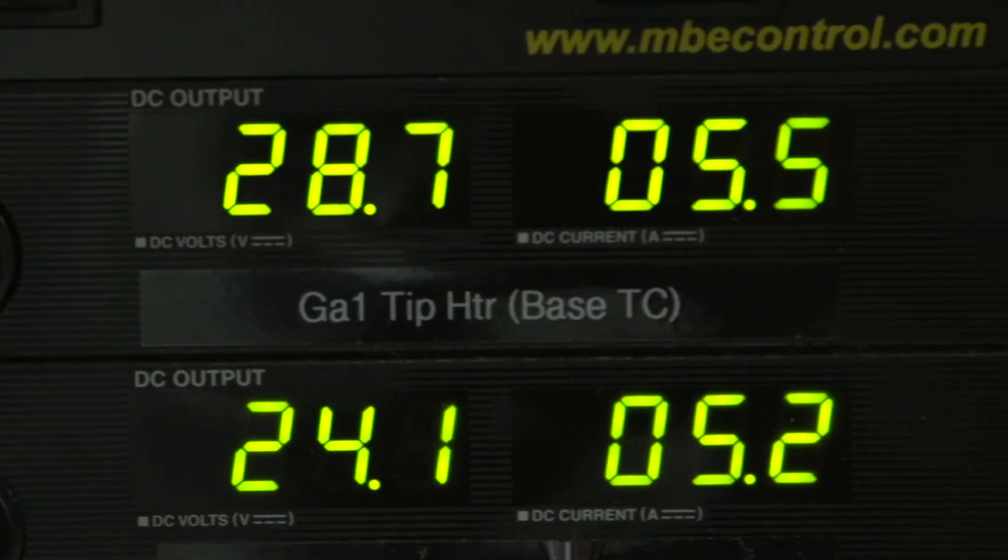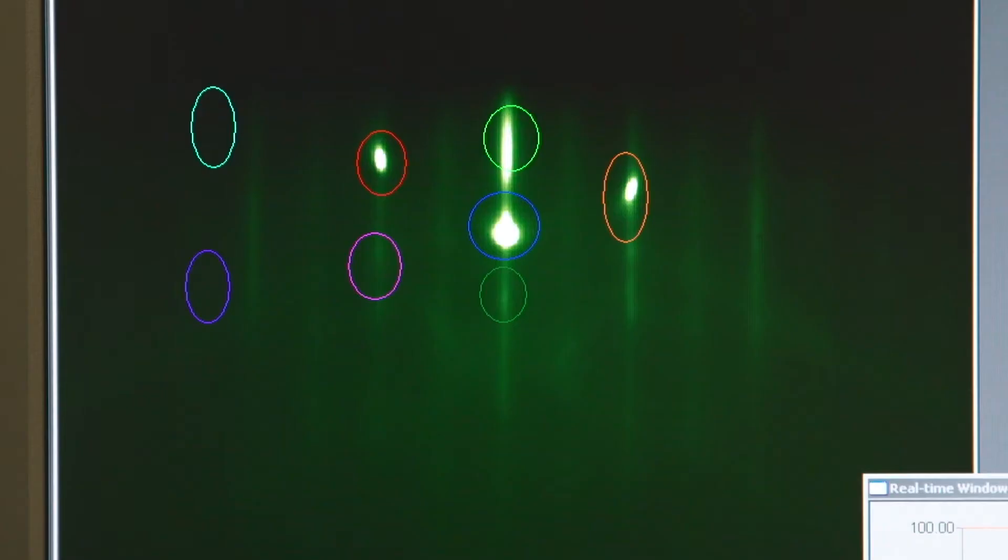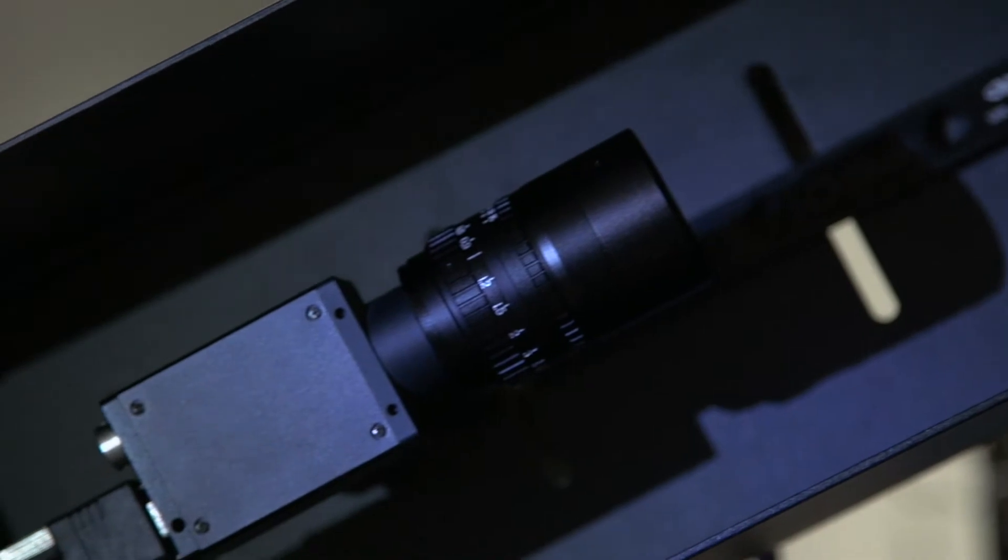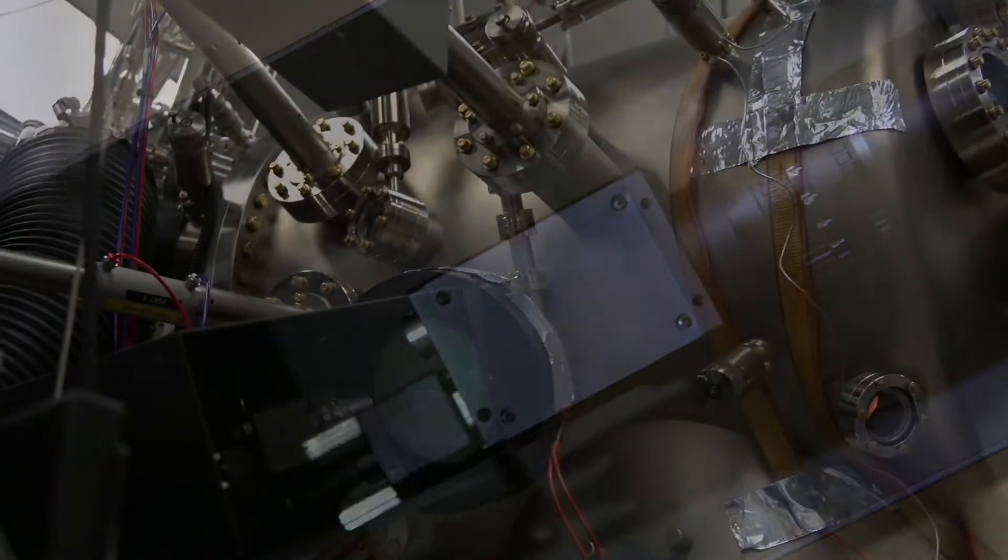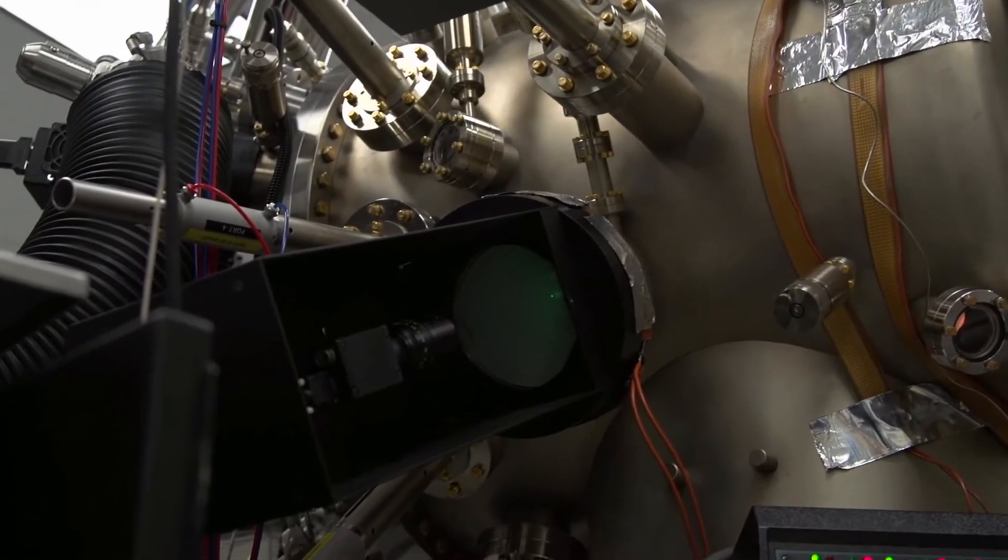We can change the electrical properties, the optical properties, the thermal properties. I sometimes explain it as a way of spray painting with atoms. And by engineering these stacks of layers that we're building up with the spray painting process, we actually make what is the first stage of a working electronic or optoelectronic device.